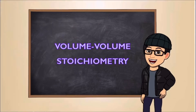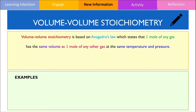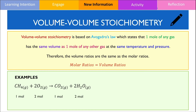In the last section of this video, we will look at calculations involving volume-to-volume stoichiometry. In these problems, we calculate the volume of the product from the volume of gas. Volume-to-volume stoichiometry is based on Avogadro's law, which states that 1 mole of any gas has the same volume as 1 mole of any other gas at the same temperature and pressure. As a result, volume ratios are the same as mole ratios.